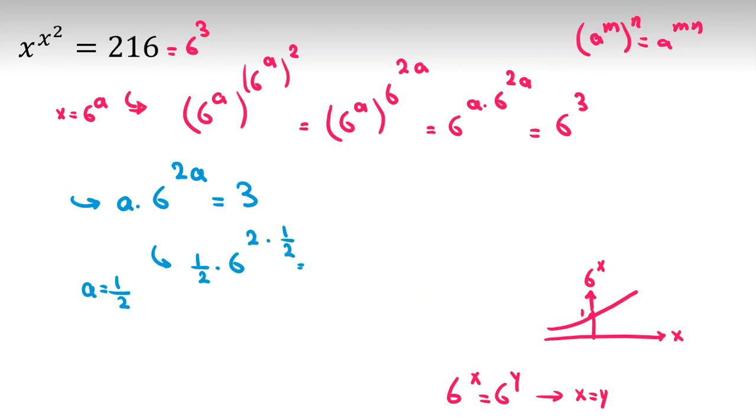2 times 1 over 2, which will be 1 over 2 times 6 to the power of—you cancel this—1, so 6 over 2, which equals 3. So a equals 1 over 2 works.